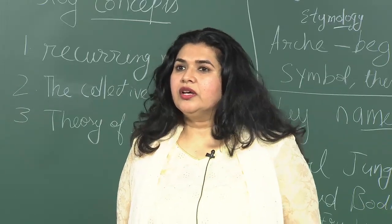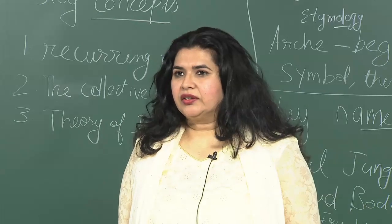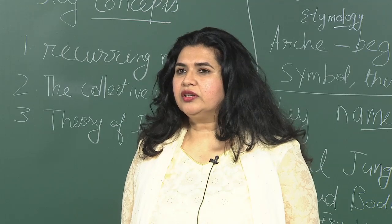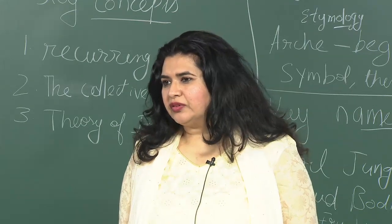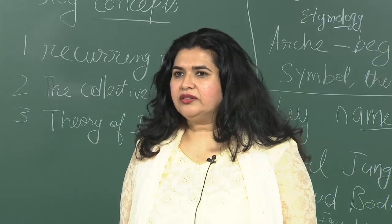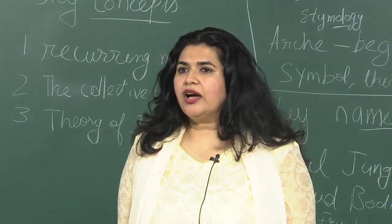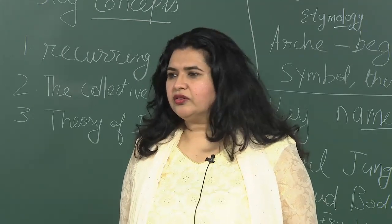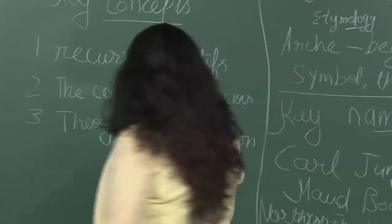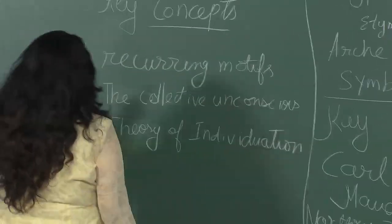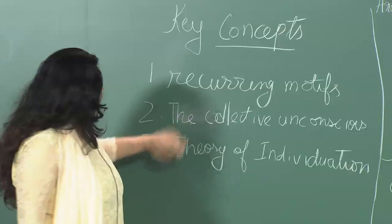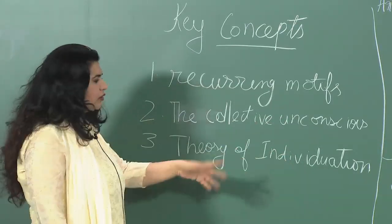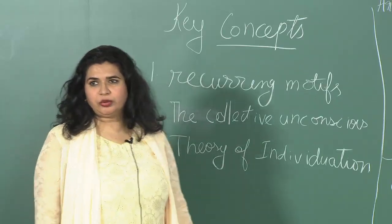What are we talking about? Categories in literature — every text, every work of literature, and we can even extend it to films — every text can be categorized and fitted into a larger framework that encompasses all works of literature or cinema, in other words all texts. Key concepts here would be recurring motifs, the collective unconscious which is related to Carl Jung's theories, and also the theory of individuation.